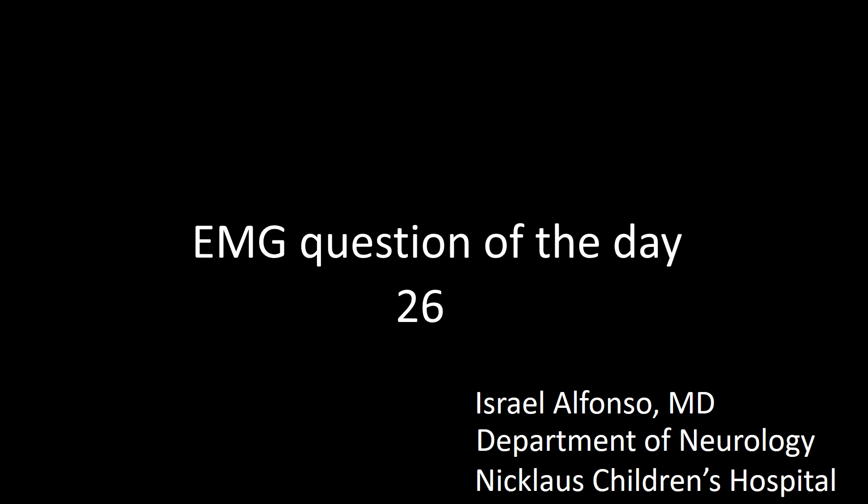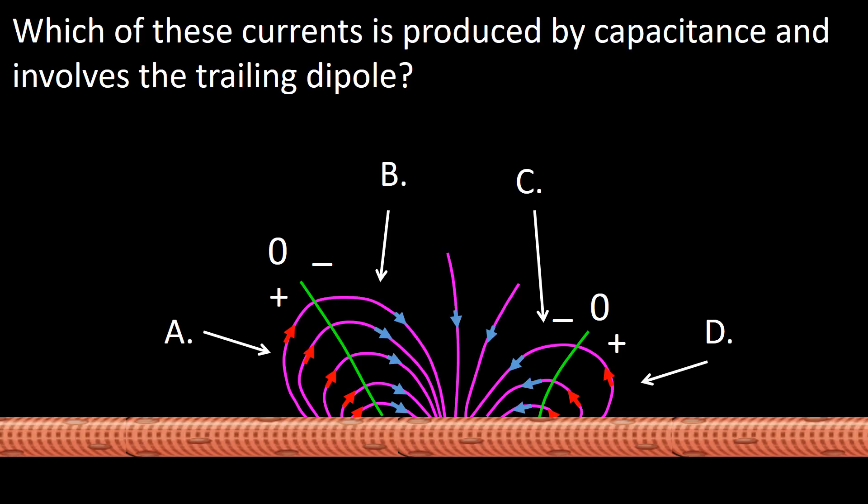EMG question of the day: which of these currents is produced by capacitance and involves the trailing dipole? Please pause the video now and choose the correct answer.